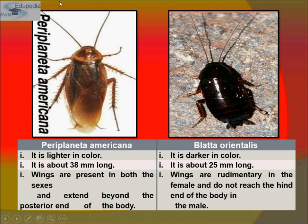Periplaneta Americana is lighter in color — light brown — while Blatta orientalis is very dark in color. Periplaneta Americana is about 38 millimeters long, whereas Blatta orientalis is about 25 millimeters long.